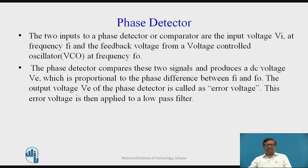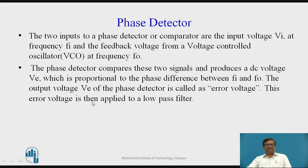Let us see how the phase detector works. The phase detector has two inputs: one is the input voltage VI at frequency FI, and the other input is the output from the voltage controlled oscillator at frequency F0, given as feedback. The phase detector compares these two signals and produces a DC voltage called VE, which is proportional to the difference between FI and F0. This error voltage VE is then applied to the input of the low pass filter.